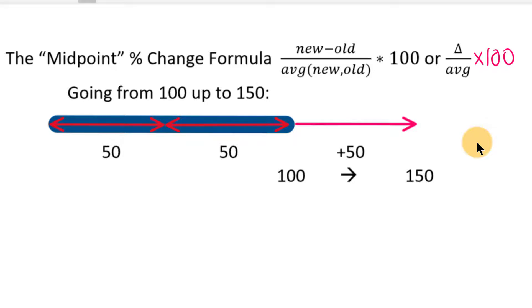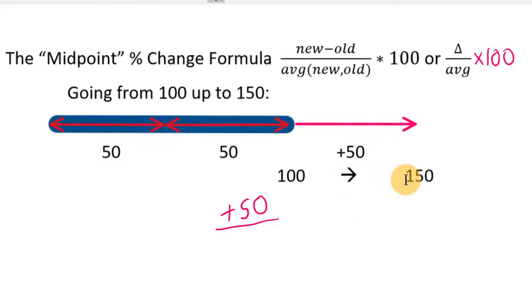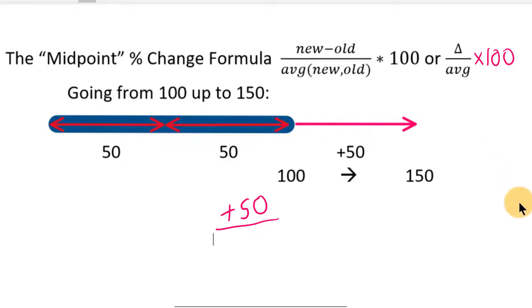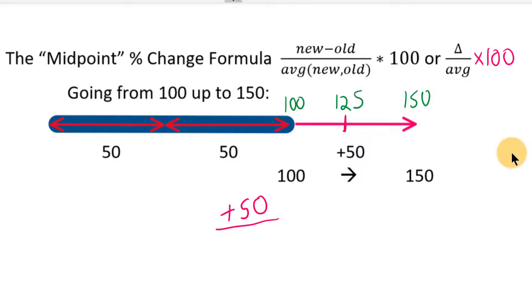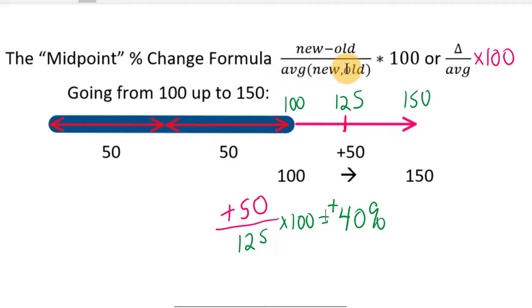Let's recalculate those two percent changes using the midpoint formula. Going from 100 up to 150: the change is plus 50, and instead of dividing by the original 100, we divide by the average of 100 and 150. We add them — 100 plus 150 equals 250 — divide by 2 to get the midpoint, 125. So 50 divided by 125 times 100 equals 40 percent. We call this a 40 percent increase using the midpoint formula.